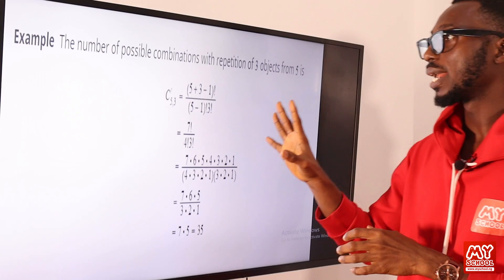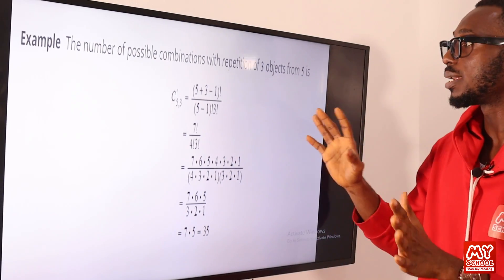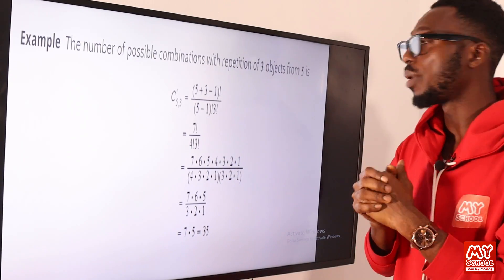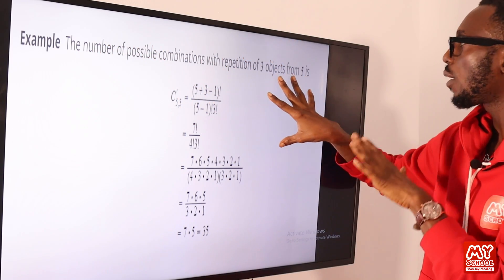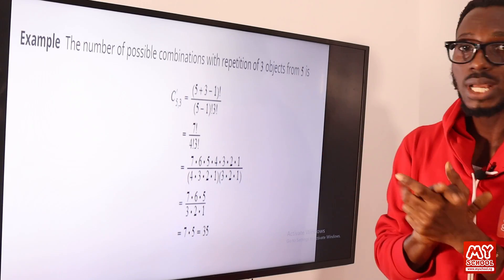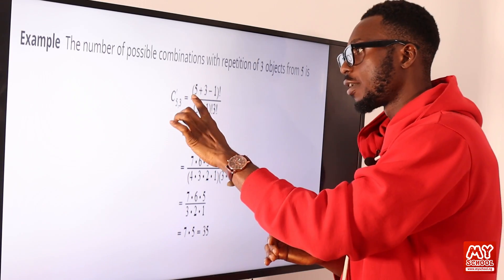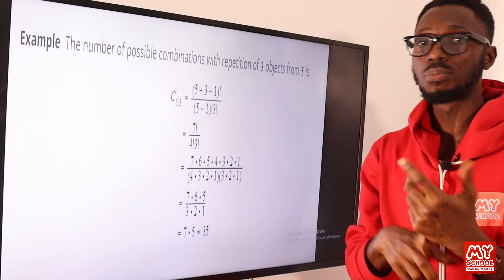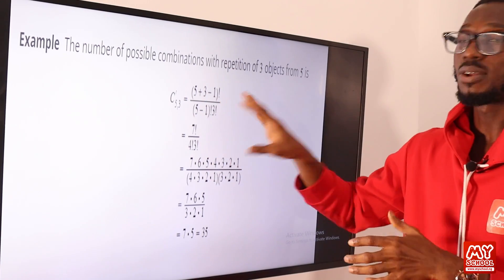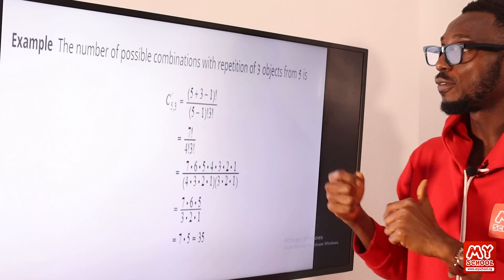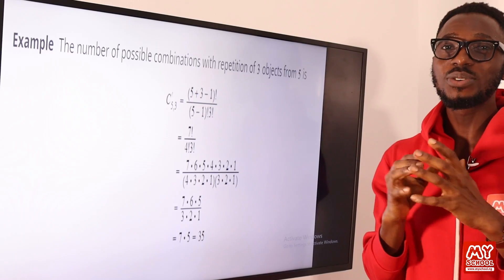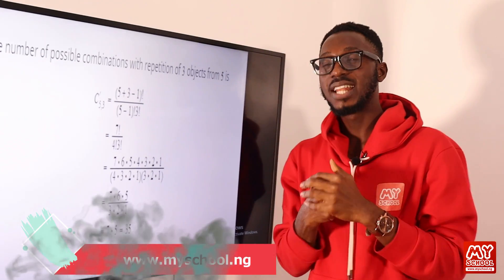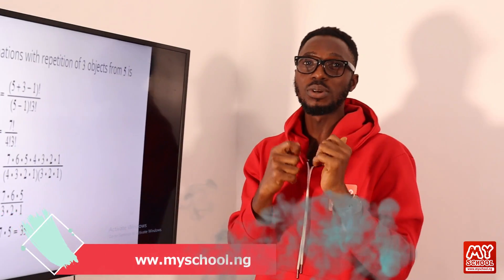Example for combination with repetition: the number of possible combinations with repetition of three objects from five objects. The total number of objects is five, and we want to combine them three at a time with repetition allowed. We slot these values into the combination-with-repetition formula. For the full worked example, click on the link in the description below to access the MySchool website and the full video lesson through your subscription.